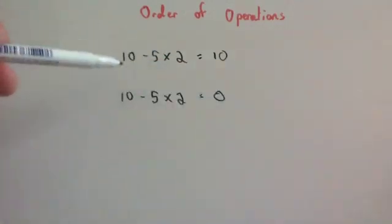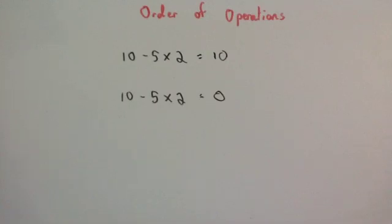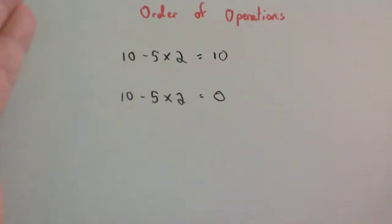A straightforward sum like this should only have one answer. So to make sure that there's a universal order in which we do operations, we have to use the correct order of operations.